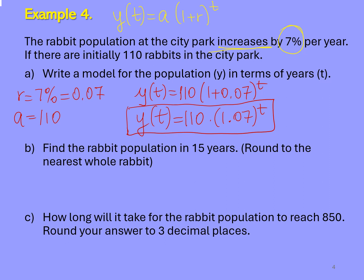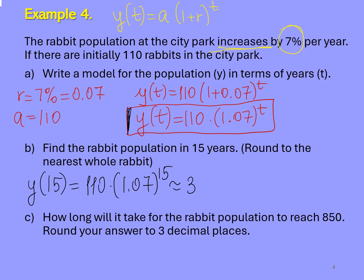Now we have to find the rabbit population in 15 years. We find Y of t when t equals 15. Y(15) equals 110 times 1.07 to the 15th power. It would equal approximately 303 rabbits.